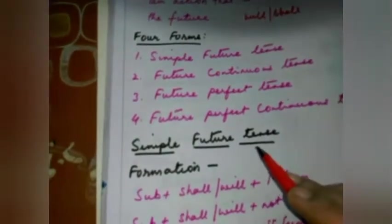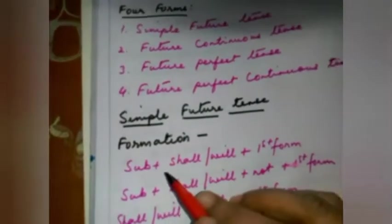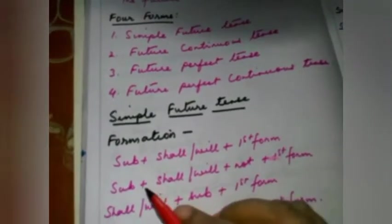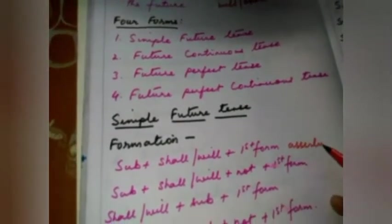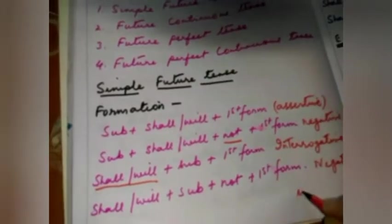Yesterday we had done the simple future tense. Formation of simple future tense is: subject + shall/will + first form — that is assertive. Subject + shall/will + not + first form — this is negative because of the word 'not.' Shall/will + subject — this is interrogative because it begins with shall and will. And shall/will + subject + not — this is negative interrogative. It ends with a question mark.